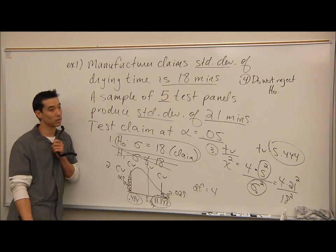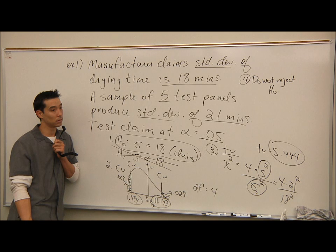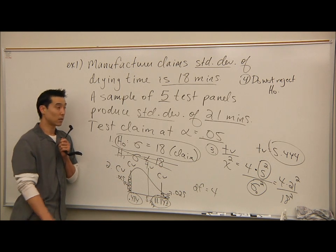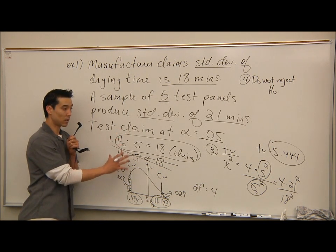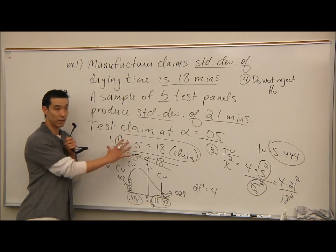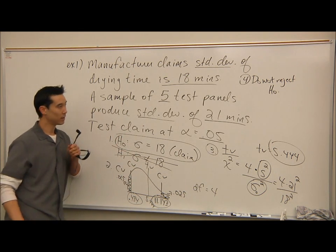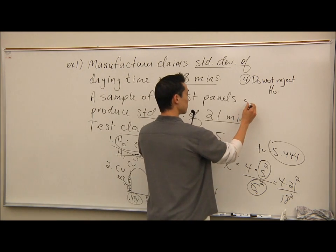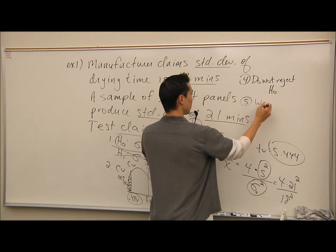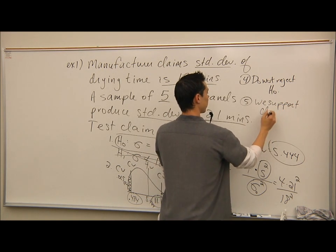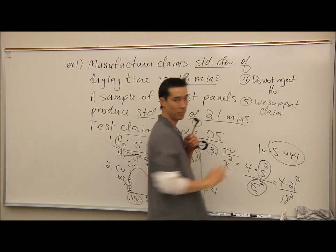Question? On the test, do we have to write out do not reject H0, or can we just circle H0 and cross out? No. I really want you to write do not reject. Because on the test, literally, I'm going to grade the five things, right? I'm going to grade the first one, the second one, the third one. And then finally, in your own words, we support...